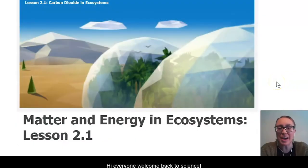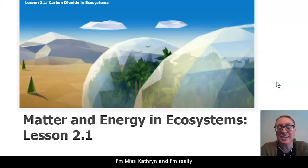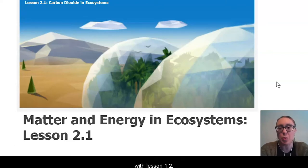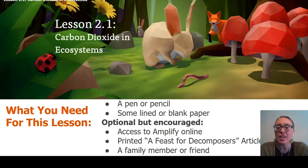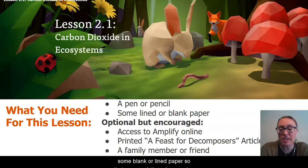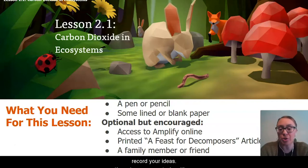Hi everyone, welcome back to science. I'm Miss Katherine and I'm really glad that you decided to join me again. Today we're going to continue in our Matter and Energy and Ecosystems unit with lesson 1.2, and this lesson is called Carbon Dioxide in Ecosystems. What you will need today, as usual, is a pen or pencil and some blank or lined paper so that you can follow along and record your ideas.